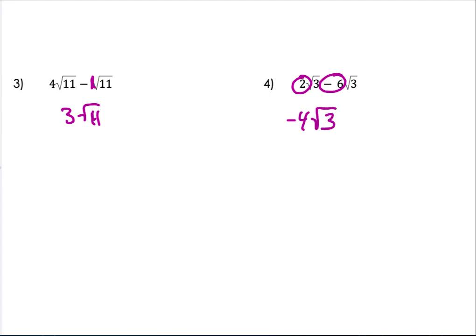Here I've got 4 square roots of 11 minus 1 square root of 11 is 3 square roots of 11. Here, 2 square roots of 3 minus 6 square roots of 3 is negative 4 square roots of 3. That square root term is similar—think of it like your variable. It just kind of goes along for the ride.